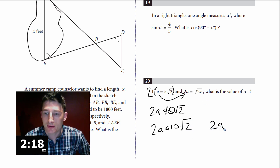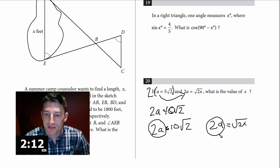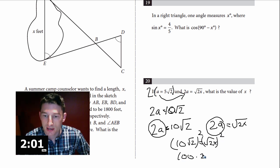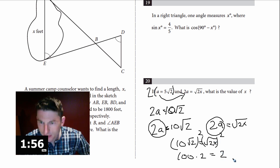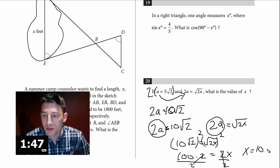Setting both expressions for 2a equal: 10√2 = √(2x). Now square both sides: (10√2)² = 2x, so 100 times 2 = 2x, giving 200 = 2x. Divide both sides by 2: x equals 100.